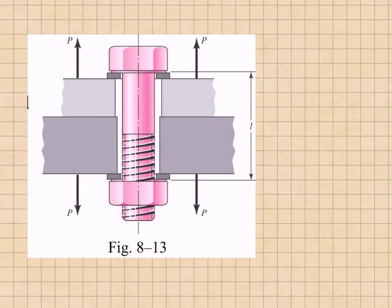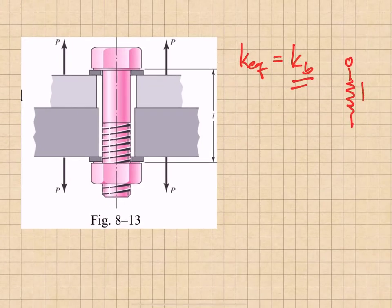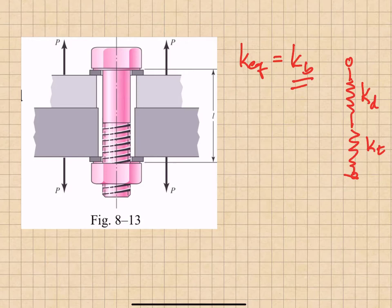In order to understand load sharing and bolted connections, we need to find the equivalent spring constant for the bolt and for the clamped members. The first thing we do is calculate an equivalent stiffness for the bolt, k sub b. We model the bolt as two springs in series: a spring associated with the nominal bolt diameter, and a spring associated with the threaded portion of the bolt. We find those spring constants and combine them to find the equivalent spring constant.